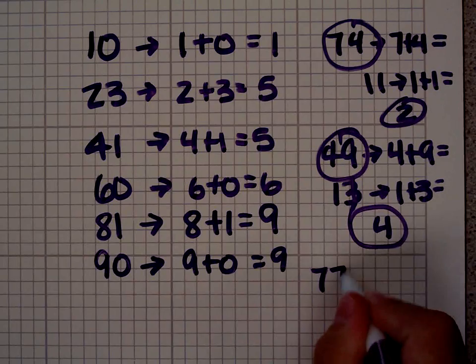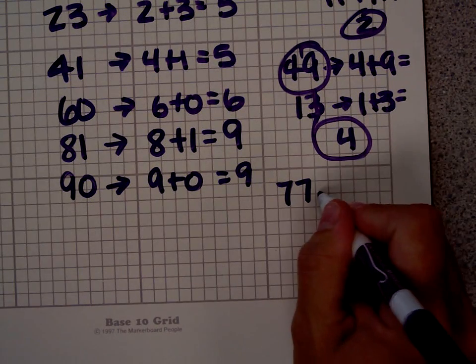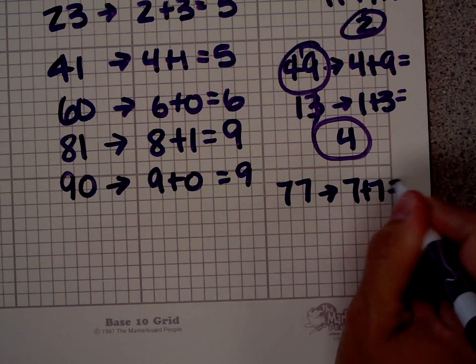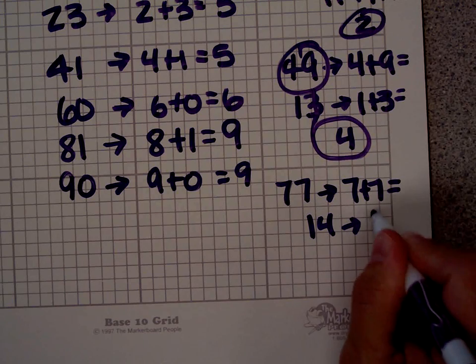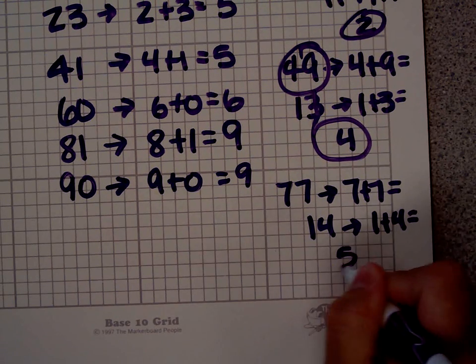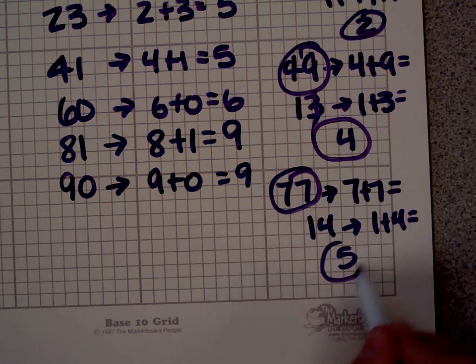Let's try the number 77. You add 7 plus 7 and get 14. 1 plus 4 is 5. So the digital root of 77 is 5.